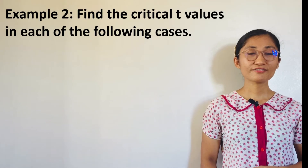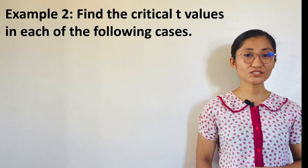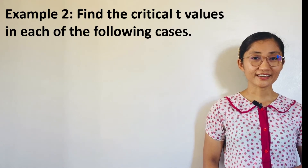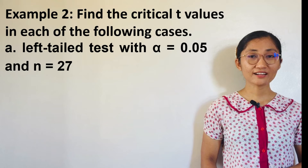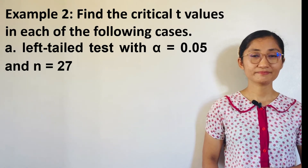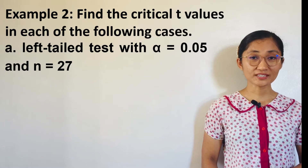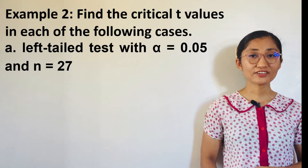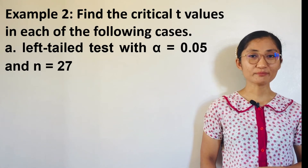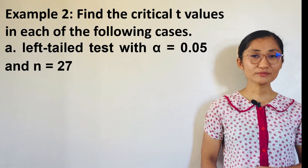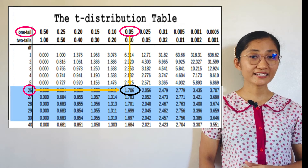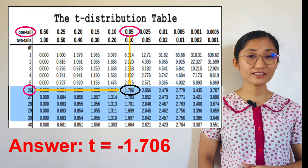Example 2: Find the critical T-values in each of the following cases. Letter A: Left-tailed test with alpha equals 0.05 and n equals 27. Since n equals 27, df equals 26, from df equals n minus 1. From the T-table, T equals negative 1.706.